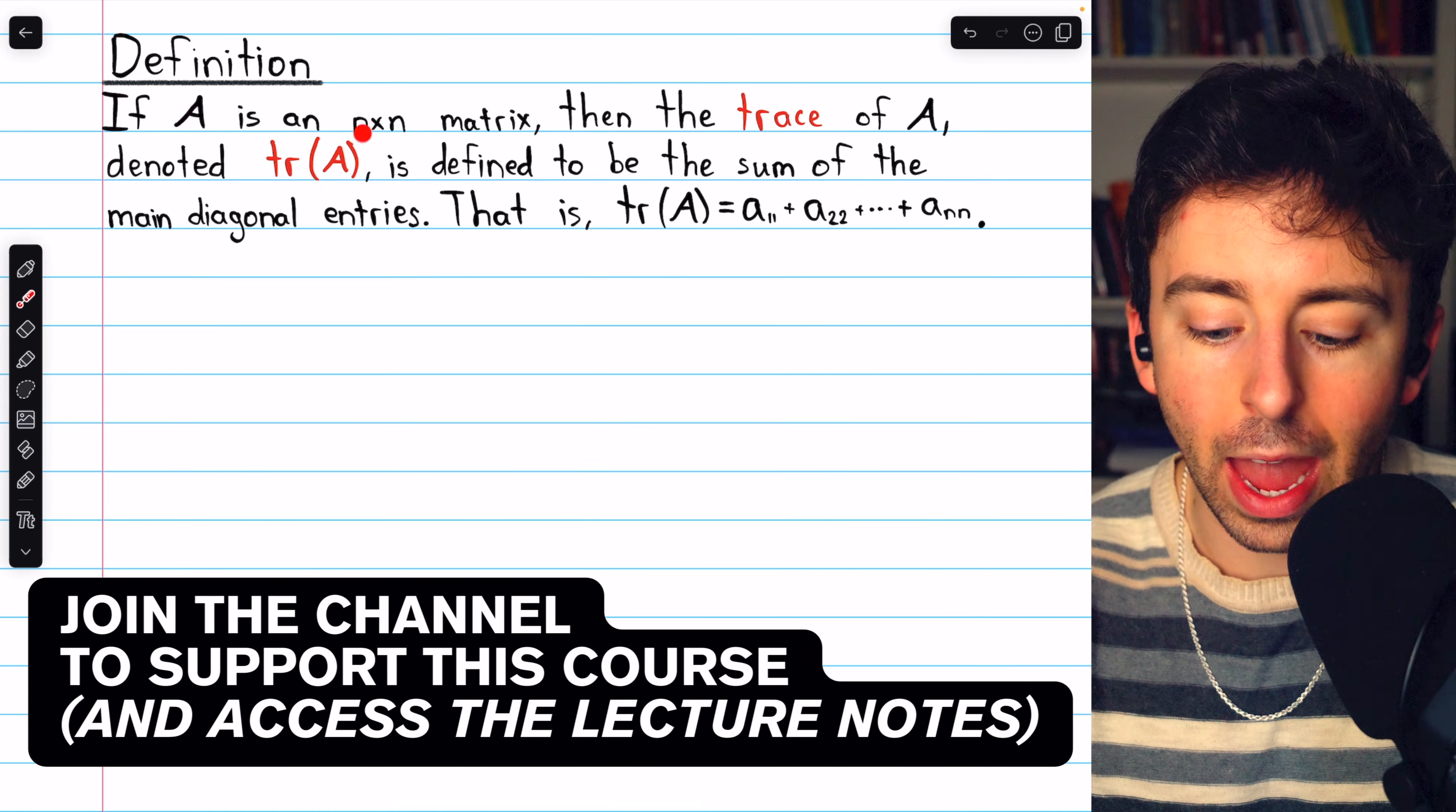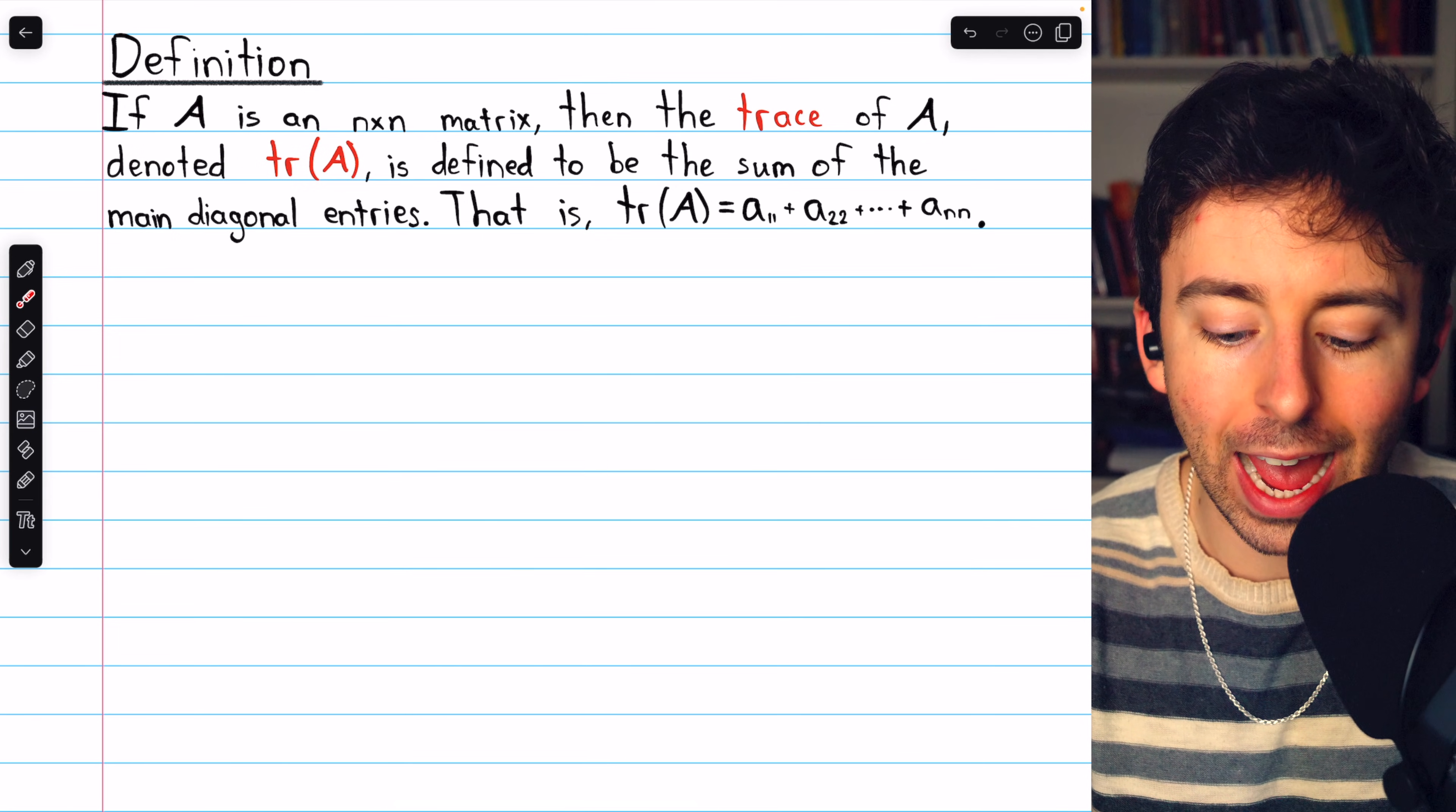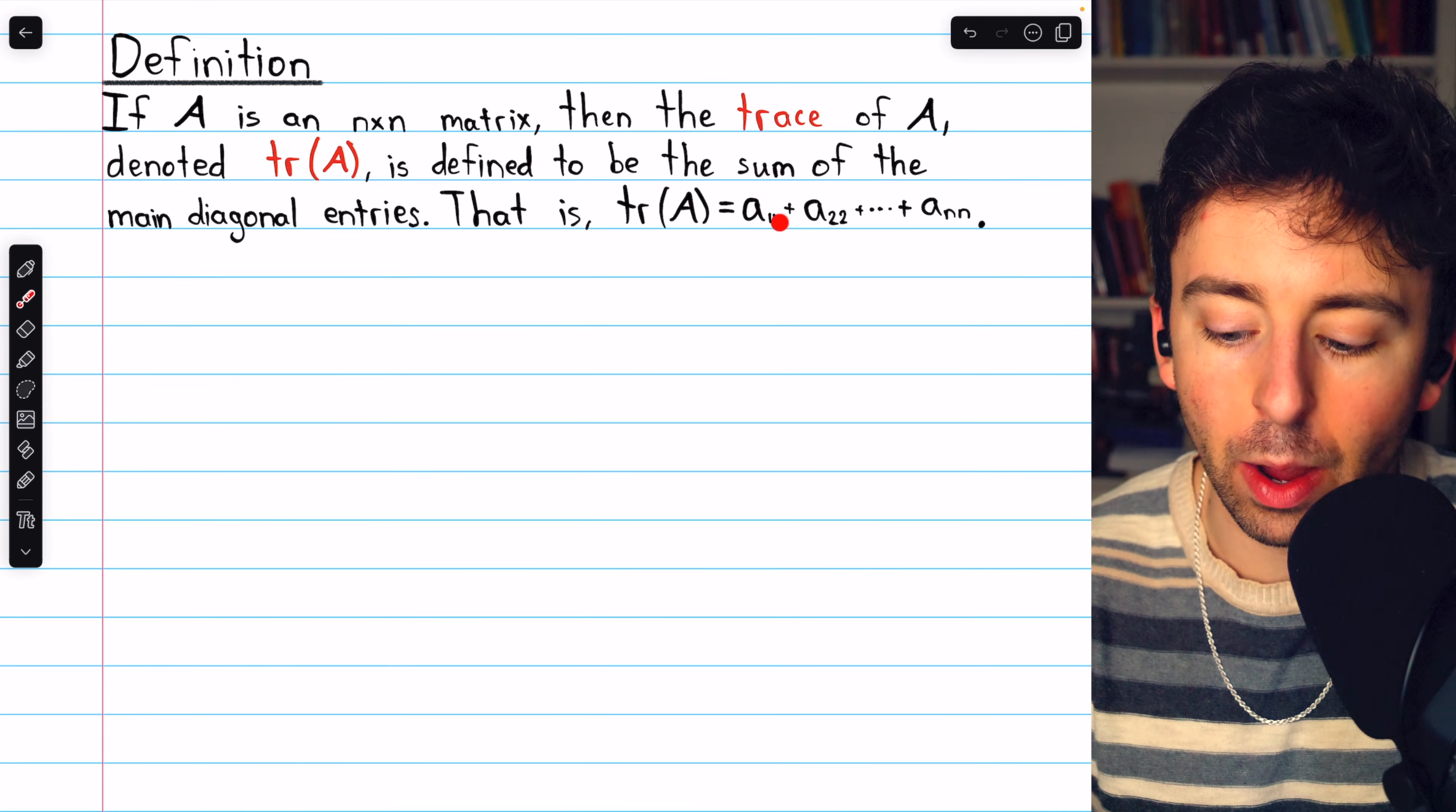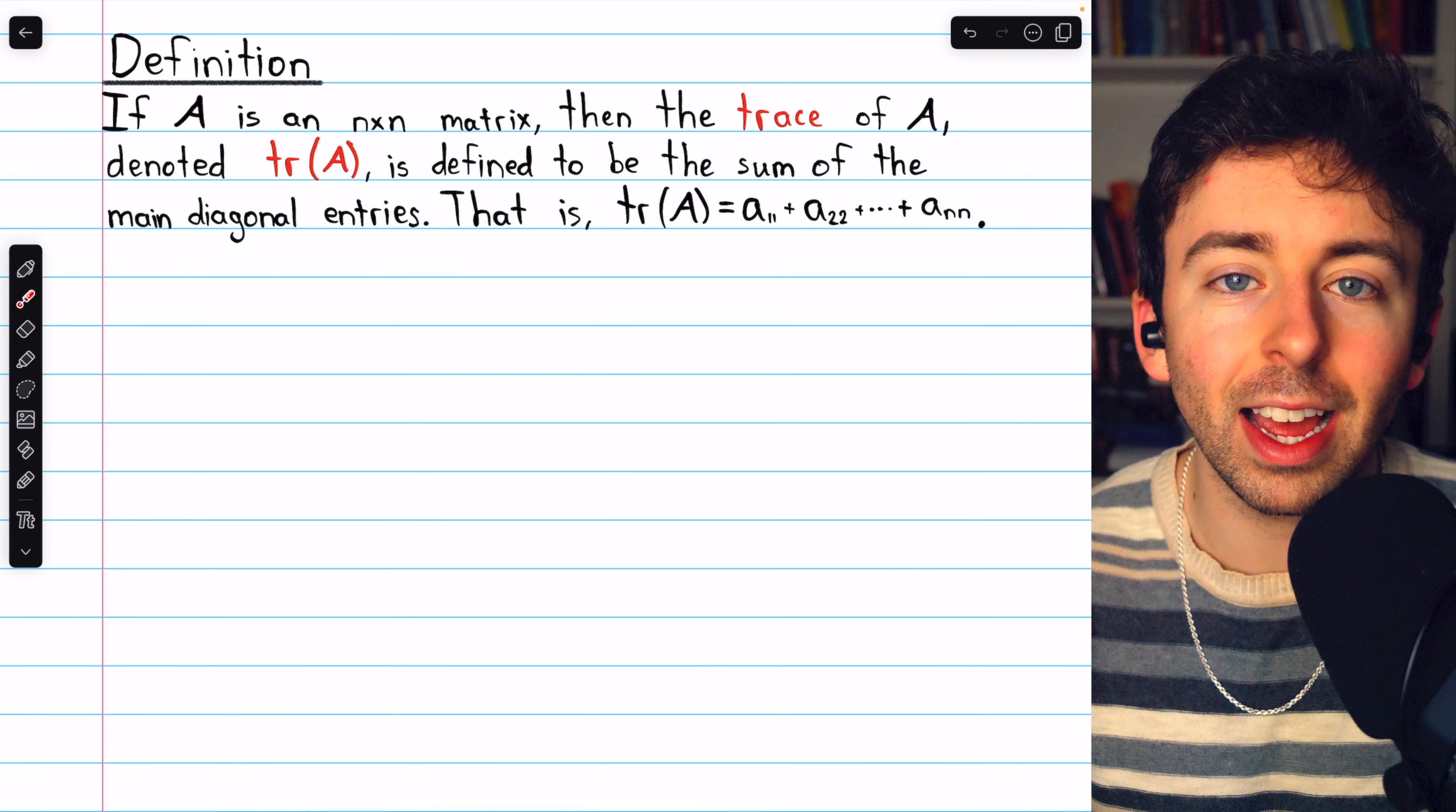If A is a square n-by-n matrix, then the trace of the matrix A, denoted tr(A), is defined to be the sum of the main diagonal entries of A, which we could write like this: A11 plus A22 plus all the way up through Ann. The trace of A is the sum of its diagonal entries.